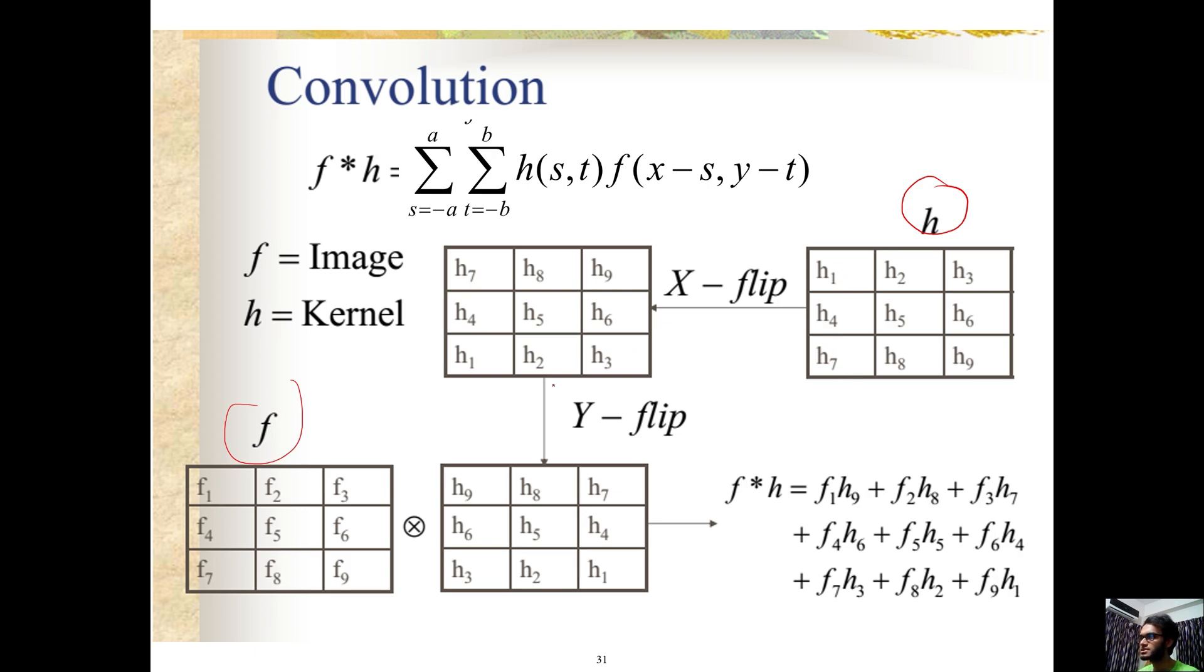Let me show you an example. Here we have a filter with values one through nine. When we apply this to an image using correlation, we compute the sum of products. For example, at position five in the original image, we compute: one times eight-nine, plus two times eight-eight, plus three times eight-five, and so on. The result replaces the center pixel value.